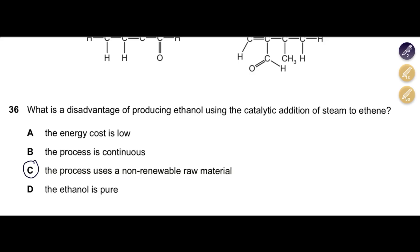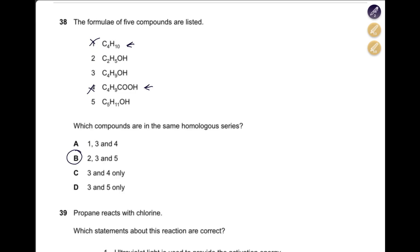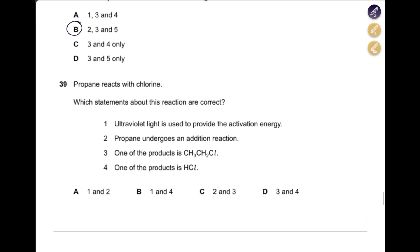The formulas of five compounds are listed. Which compounds are in the same homologous series? Compounds two, three, and five all have an OH (hydroxyl) group — they are all alcohols. So the answer is B. Compound one is an alkane and compound four is a carboxylic acid, so one and four do not belong with the others.